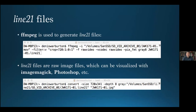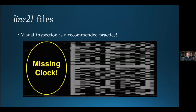FFmpeg is used to generate the Line 21 files, which it does by converting each instance of line 21 into 728-bit raw luminance values. Since they're essentially raw image files, they can be readily visualized by your imaging program of choice. Doing so is a recommended practice, as it allows you to quickly spot issues with the source material and adjust your approach to data extraction.